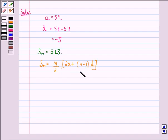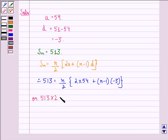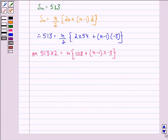So now, putting down the values, we have 513 equals N by 2 into 2 into 54, that is the first term, plus N minus 1 into D, that is minus 3, or 513 into 2 equals N into 108 plus N minus 1 into minus 3.